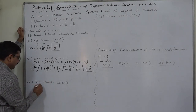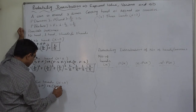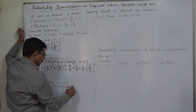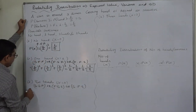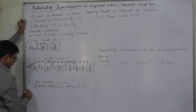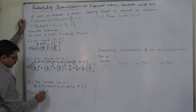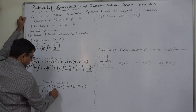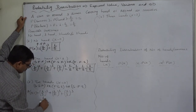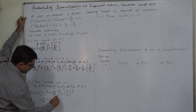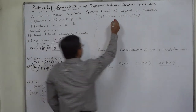Two heads are possible in three ways: head in the first and second trials with tail in the third; tail in the first and head in the second and third; or head in the first, tail in the second, and head in the third. Each has probability (1/2)³ = 1/8, so the total is also 3/8.